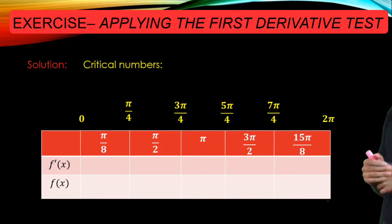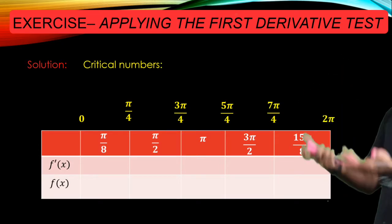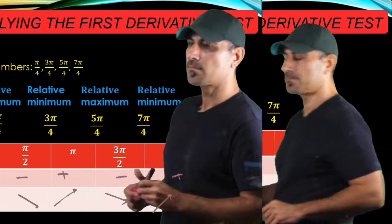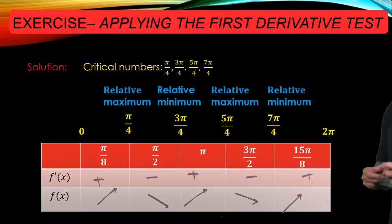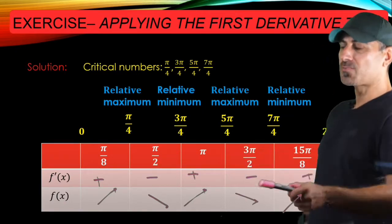And if f prime is positive, let's say at pi over 8, then you're going to put a plus sign. If it's negative, you put a minus sign, and you just do it for all sample points. And here we go. So we have plus, minus, plus, minus, plus.